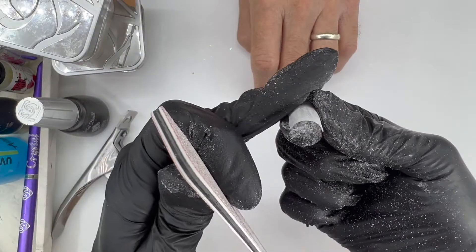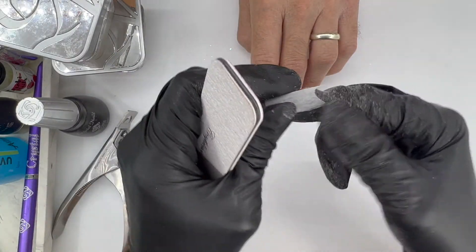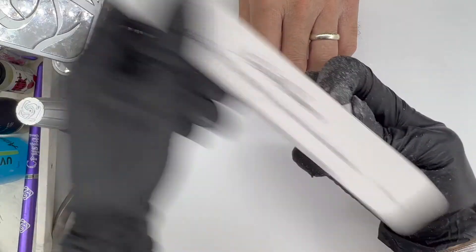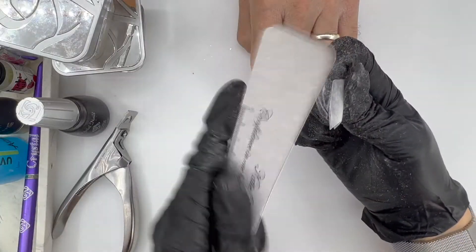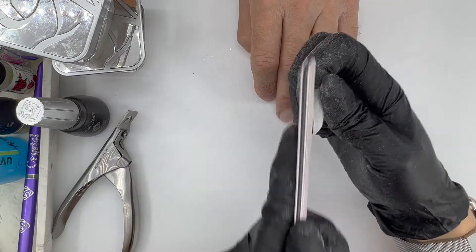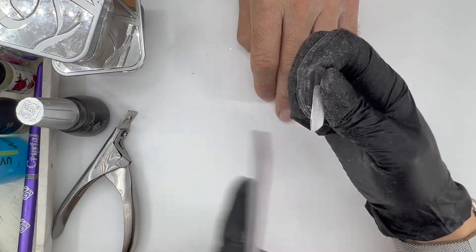So keep checking the thickness a bit as you do this. And at that point, if you know that those sidewalls were also too low, you can also file them now.